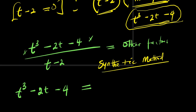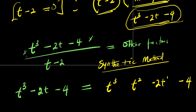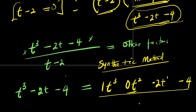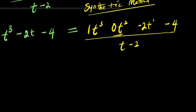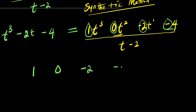For the synthetic method, you need to write it in full: t cubed — remember there is no t squared term, but in synthetic method you need to add it — then negative 2t, then negative 4, which is the constant. The coefficients are 1, 0, negative 2, and negative 4. You divide by t minus 2, so you equate t minus 2 to 0, giving t equals 2. Copy that 2 to the side and write all the coefficients: 1, 0, negative 2, negative 4.